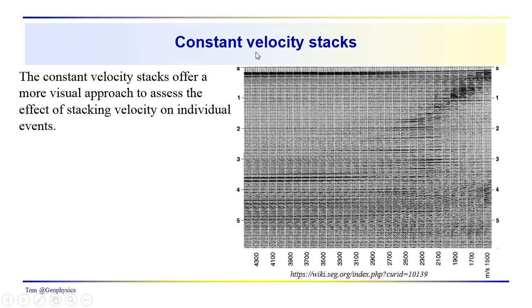So here's another example. This is a constant velocity stack. Here we've got time displayed on the left from zero down to about six seconds. Then we, again, we have these velocities. But we're running from right to left, low velocity to high velocity. Again, a good link to look at this.